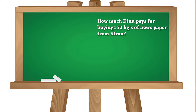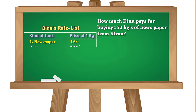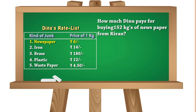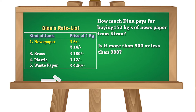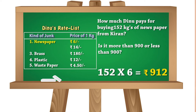How much does Dinu pay for buying 152 kg of newspaper from Kiran? Per kg of newspaper, Dinu pays rupees 6. For 152 kg — is it more than 900 or less than 900? First make a guess, then compute and verify. Here 152×6 gives 912, so it is more than 900.